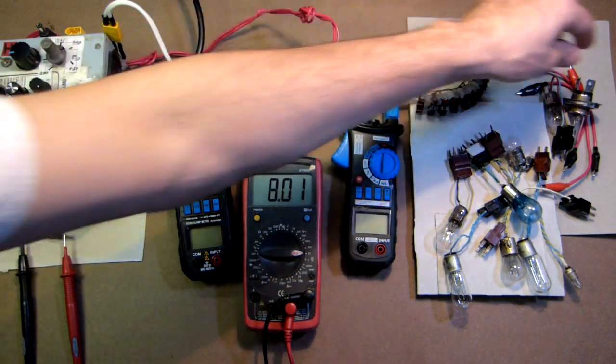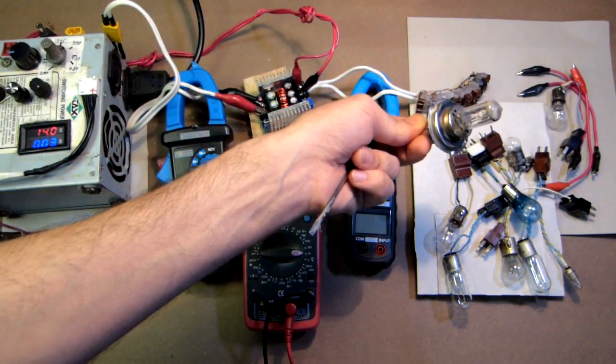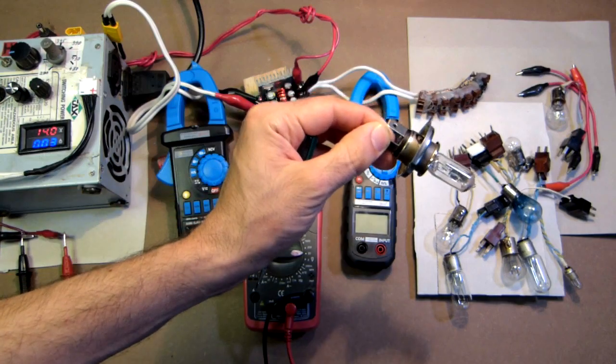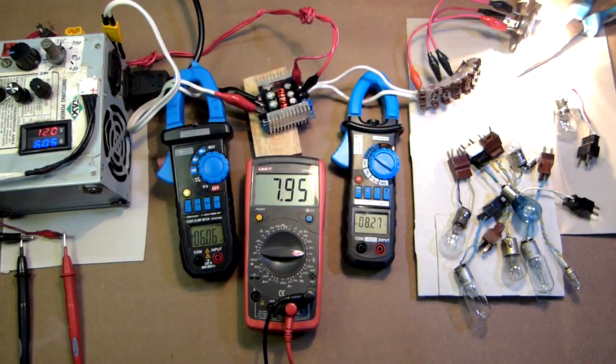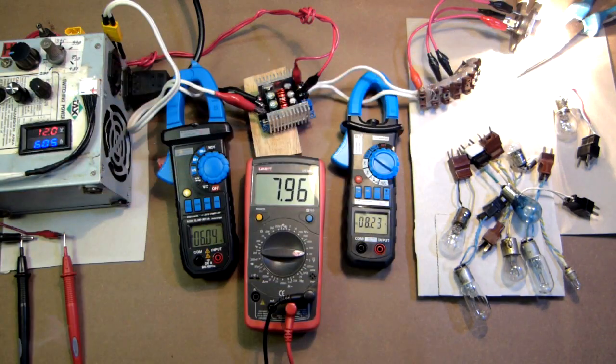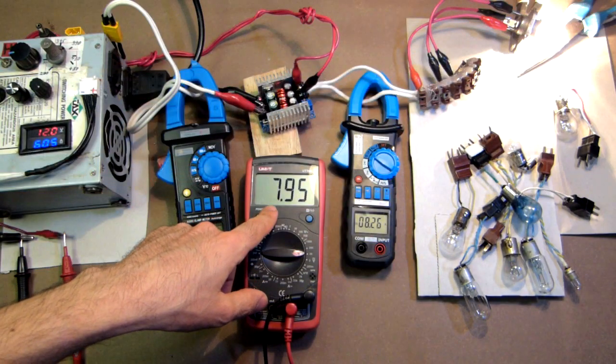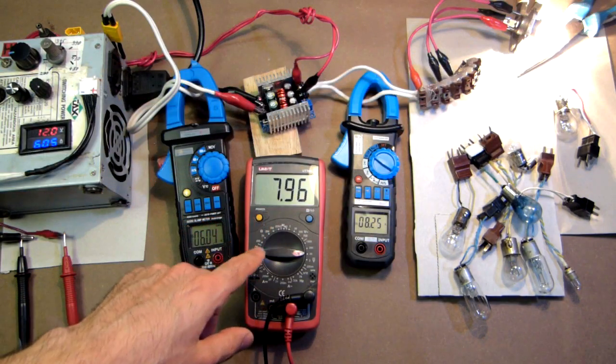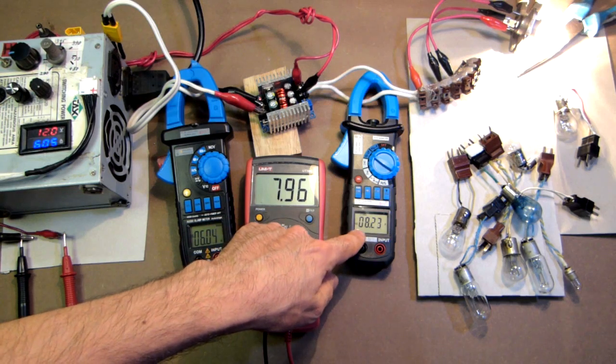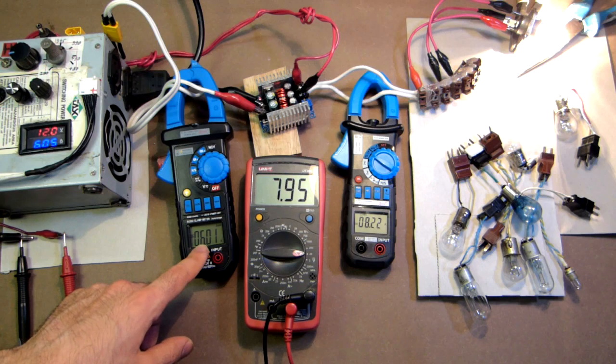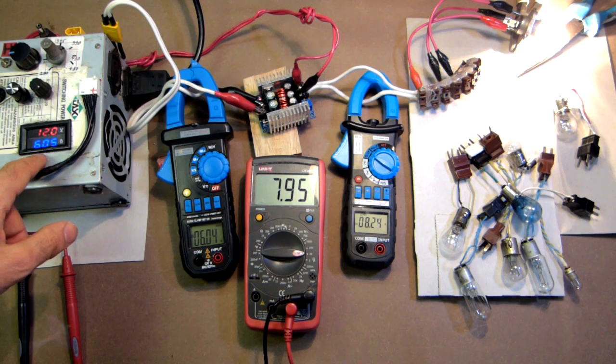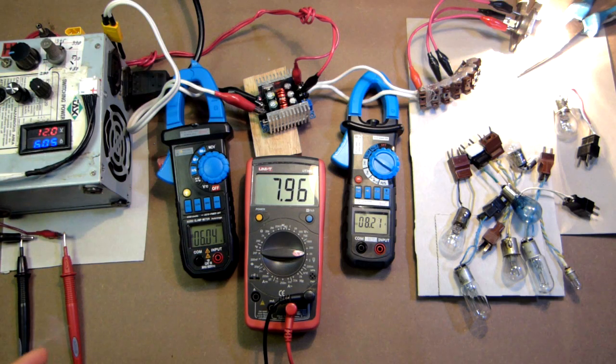First of all let's connect this car bulb, which is the most powerful one among these bulbs. So now we have connected two car bulbs. Here we have approximately 8 volts and here approximately 8 amps. On the input we have 6 amps, here also 6 amps. Let's increase the load.